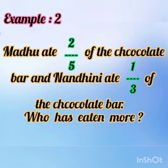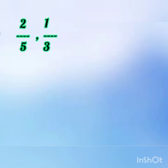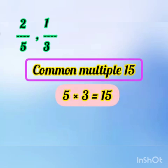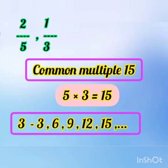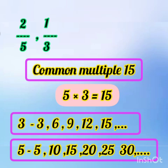Consider a problem: Madhu used a chocolate bar and ate 2 by 5 parts. Nandini used a chocolate bar and ate 1 by 3 parts. Who has eaten more? The fractions are 2 by 5 and 1 by 3. The denominators are different: 5 and 3. To compare, we find the least common multiple of 5 and 3. Multiples of 3: 3, 6, 9, 12, 15. Multiples of 5: 5, 10, 15. The least common multiple is 15. So the common denominator is 15.